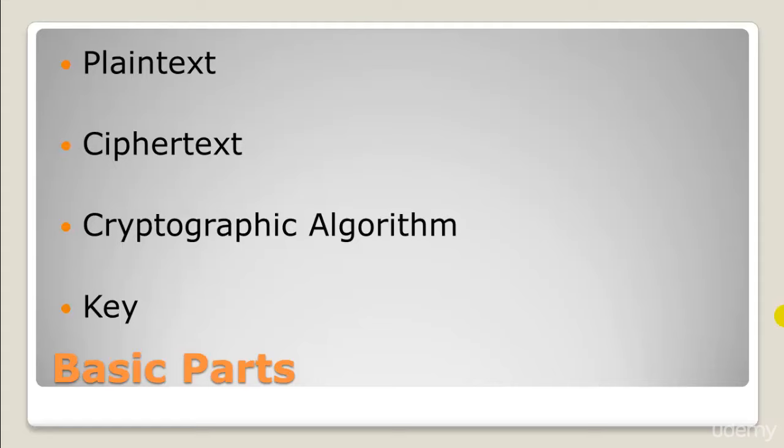After that we have the cryptographic algorithm — a mathematical formula which is used to scramble the plaintext to yield the ciphertext. Converting plaintext to ciphertext using the cryptographic algorithm is called encryption, and converting the ciphertext back to plaintext using the same cryptographic algorithm is called decryption.